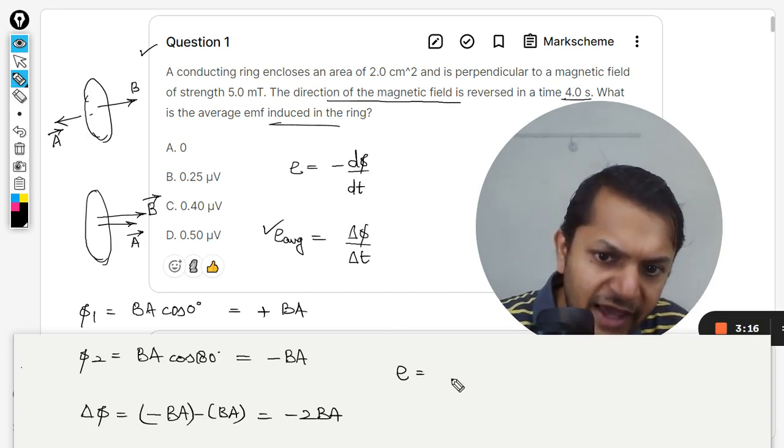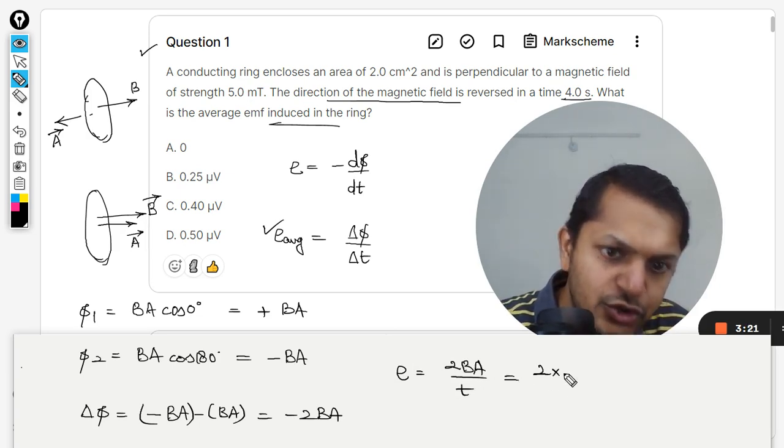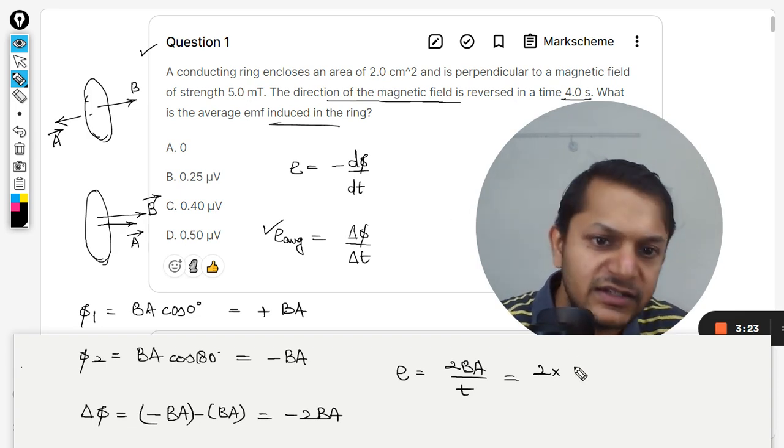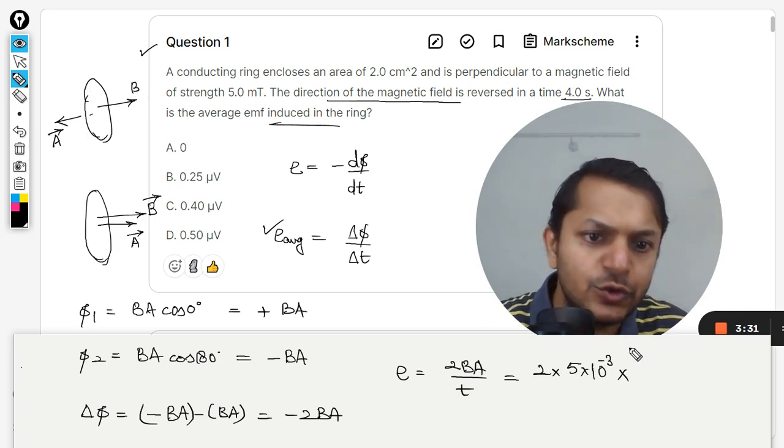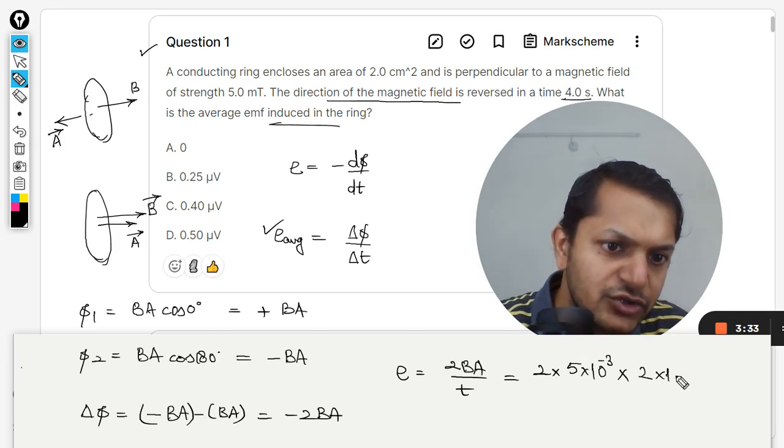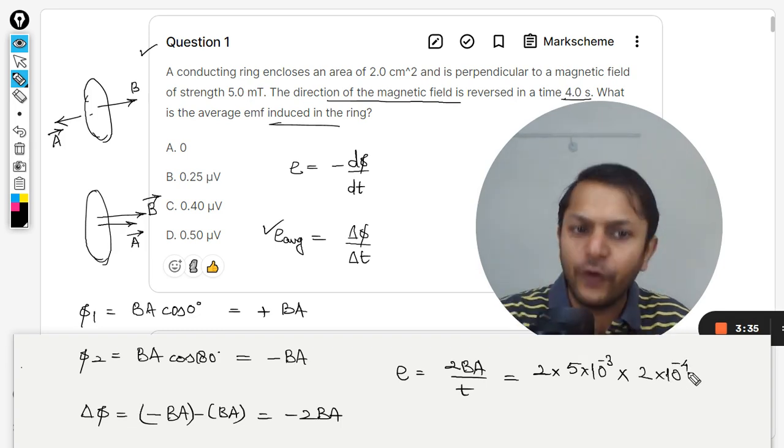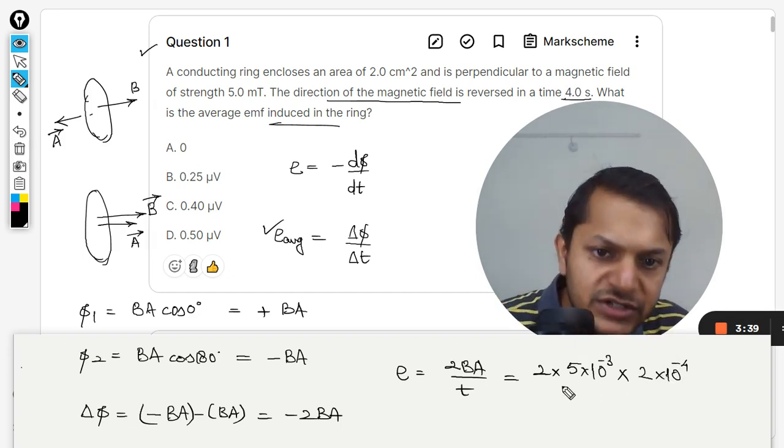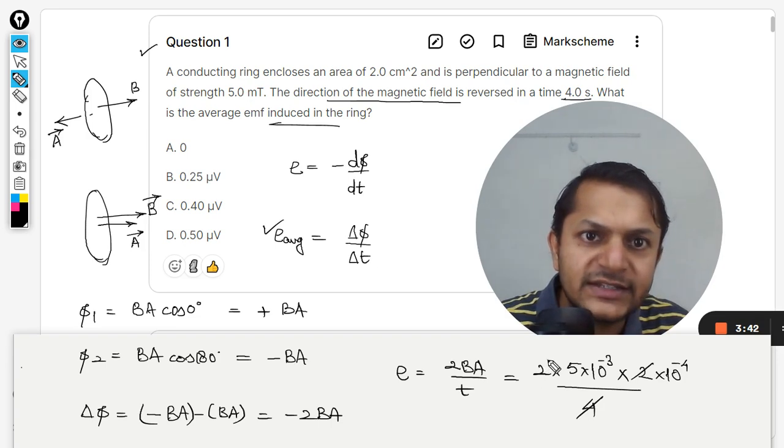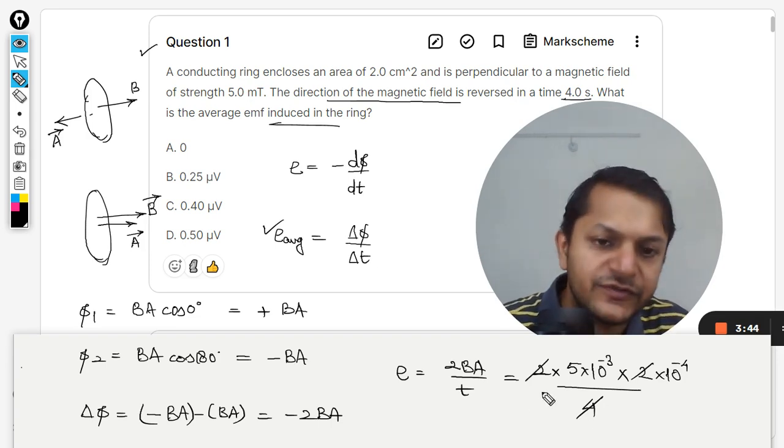So it will be final minus initial, so -BA minus positive BA, just like this. So overall it will become twice of BA. And the time is 4 seconds. We are just concerned with the magnitude so the emf average will be 2BA divided by time t. So it is 2 × magnetic field intensity 5 milli tesla and area is 2 centimeter square, so 2 × 10^-4 because centimeters has to be converted into meters.